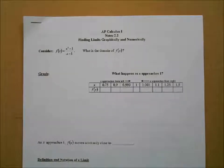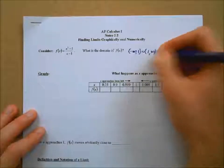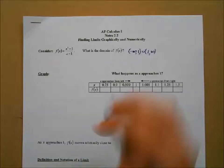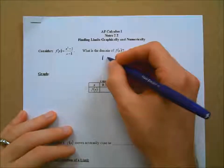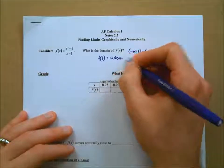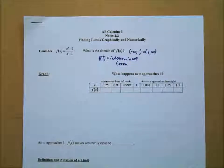Volunteers, what would the domain of this function be? Bryce answered: negative infinity to 1, union 1 to infinity. Why did you exclude the value of positive 1? Because if 1 is plugged into the denominator, we're actually going to end up with 0 over 0 when we plug in 1. So f(1) is indeterminate form — not undefined, which would be a number over 0, but since it's 0 over 0, that is indeterminate form.